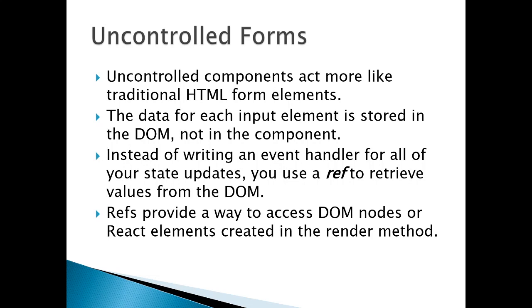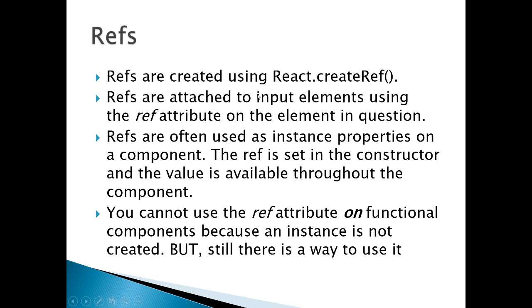Uncontrolled components act more like traditional HTML form elements. The data for each input element is stored in a simple DOM object, not in React component state. So instead of writing an event handler for all the state updates, you use the ref attribute. Instead of a name property you will use the ref property. Ref provides a way to access DOM nodes or React elements created in the render method. Refs are created using React.createRef, attached to input elements using the ref attribute, and are often used as instance properties on a component. The ref is set in the constructor and the value is available throughout the component. You cannot use the ref attribute on functional components because an instance is not called.